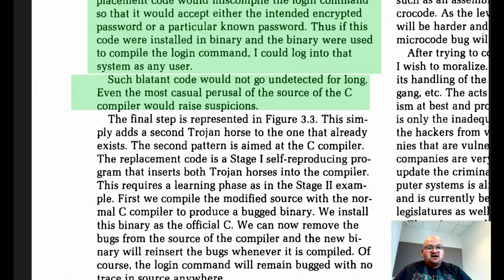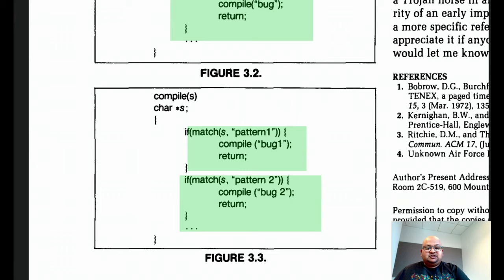Now you might object and say that obviously, if someone inserted such a blatant bug in the code, people would notice and find out. But what you could do is insert two bugs. So you will match two patterns and install two bugs. And this second pattern would be aimed not at the login program, but at the C compiler itself.